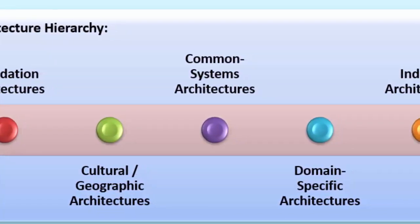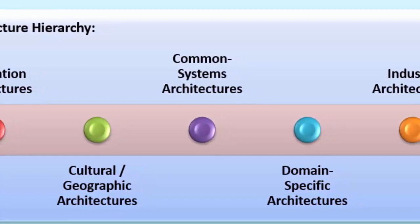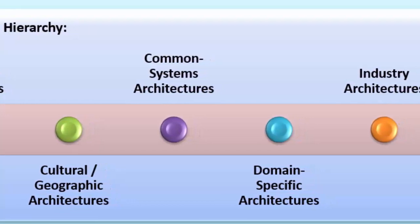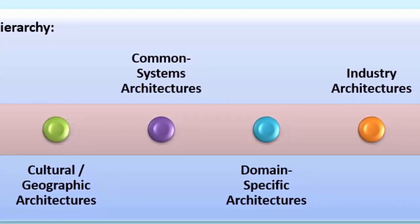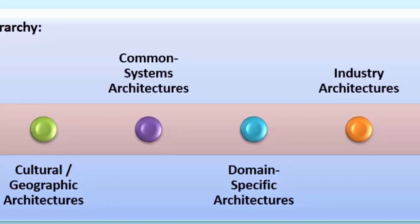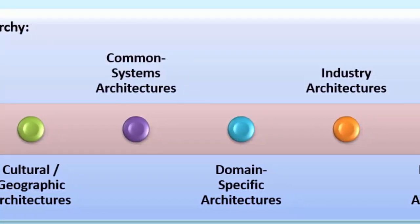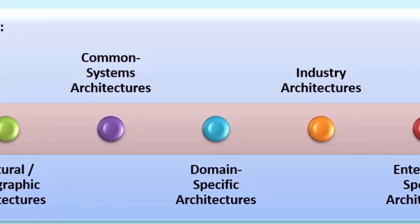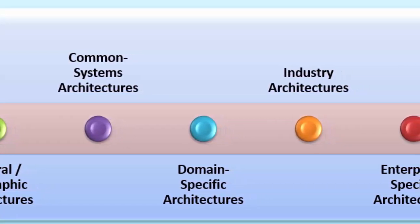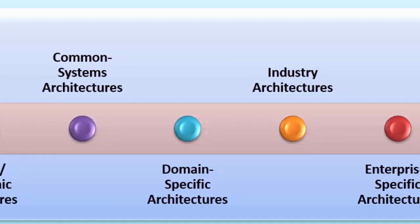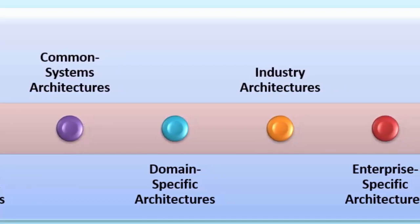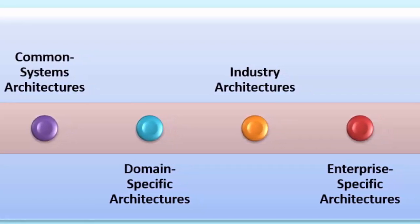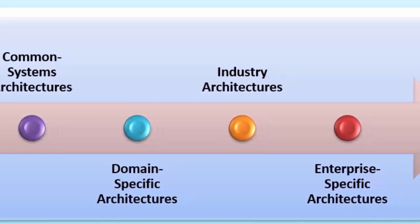Then there are cultural or geographic architectures — architectures that reflect the language, politics, and culture of a particular geographic area. These could be regional or country-based architectures. Then we come to common systems architectures. A common system architecture could be something like a faster payments architecture in the banking industry, or it could be the common system that is the internet. Then we come to domain-specific architectures — architectural elements that are true for all accounting practices, or common elements true for all process architectures.